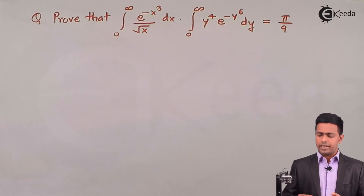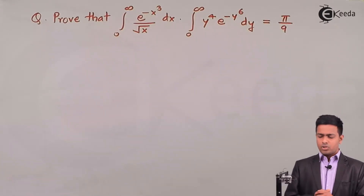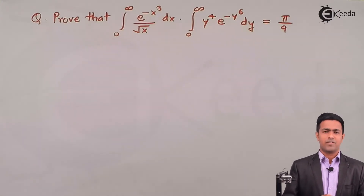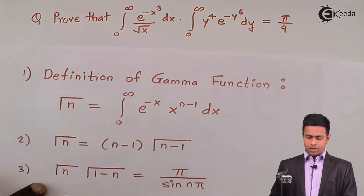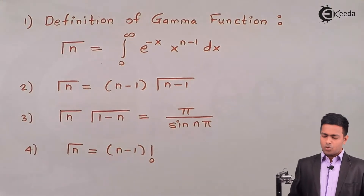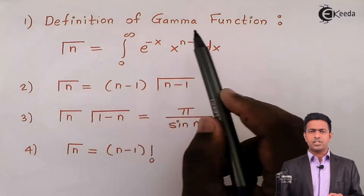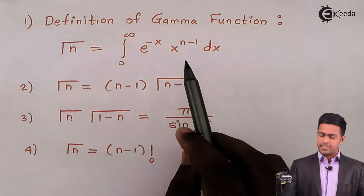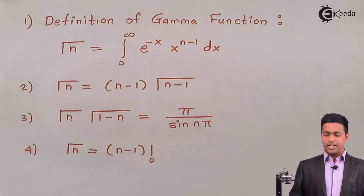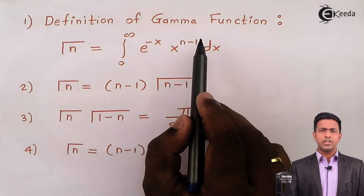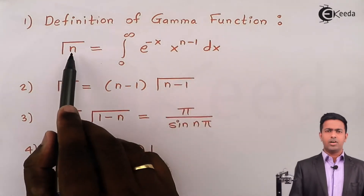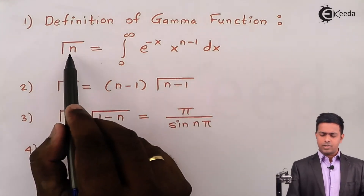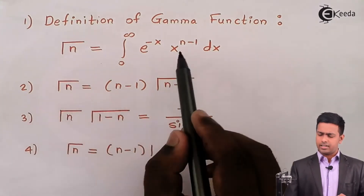Before starting, let's understand the definition of the gamma function. The definition states that the integration from 0 to infinity of e^(−x) · x^(n−1) dx equals gamma(n). Whatever the power of x is, we just add 1 and write that number inside the gamma. The value inside the gamma is always 1 greater than the power of x.